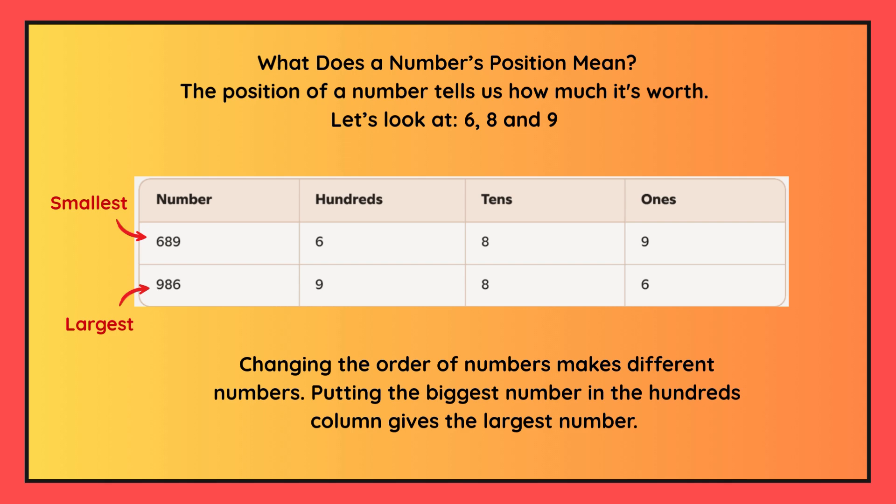Changing the order of numbers makes different numbers. Putting the biggest number in the hundreds column gives the largest number.